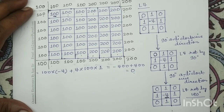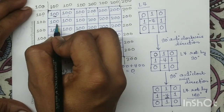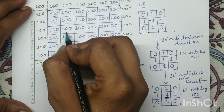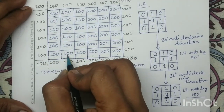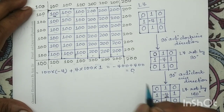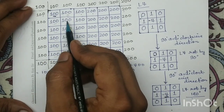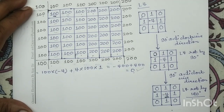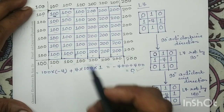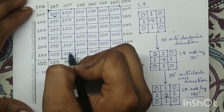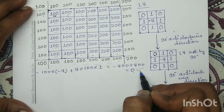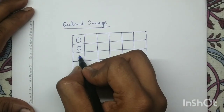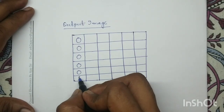Similarly, if we place the center of this mask at other pixels with the same surrounding values, we will get the same response of 0. So in the output image, for all these pixel locations, I will write the response as 0.